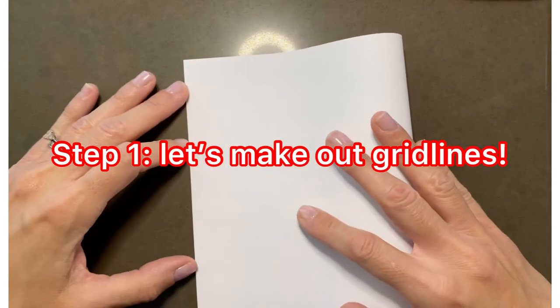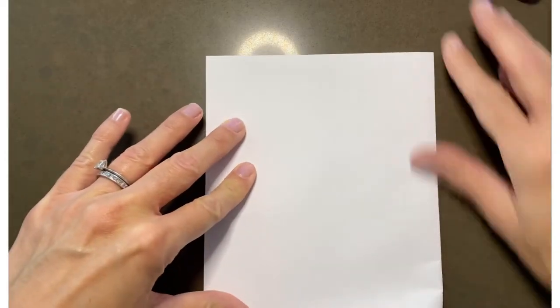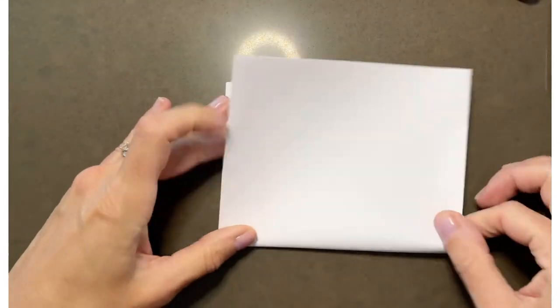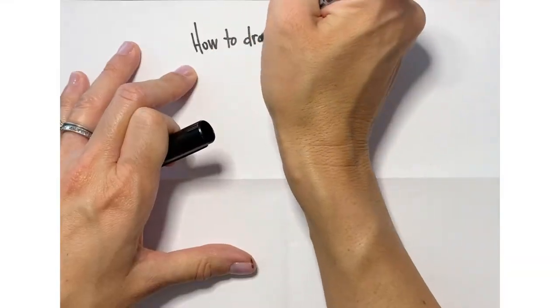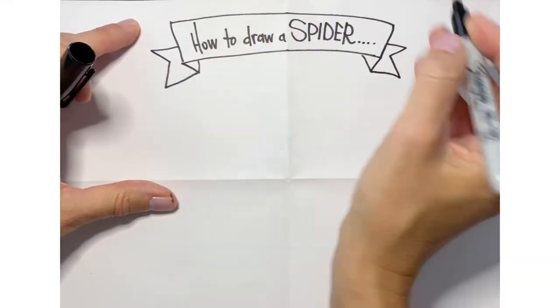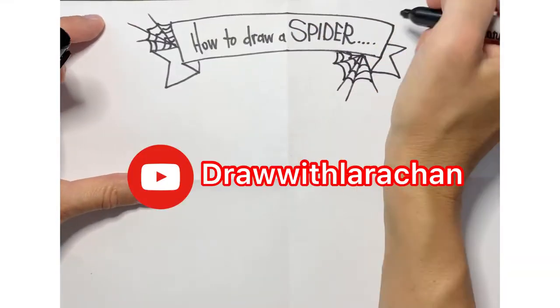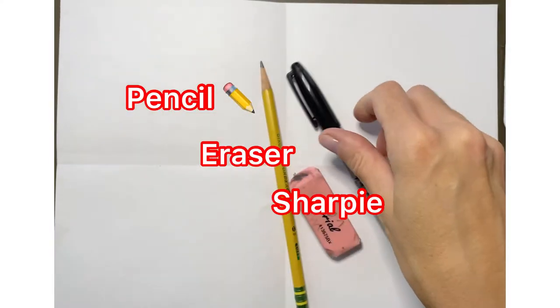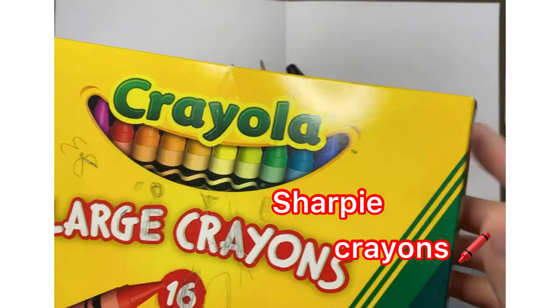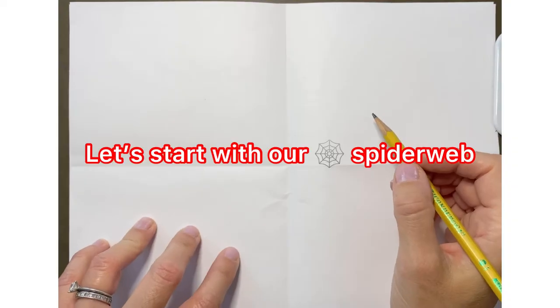Let's get right into it. Step one, let's make our grid line. Now that we have our grid lines let's go ahead and start with our spider web.